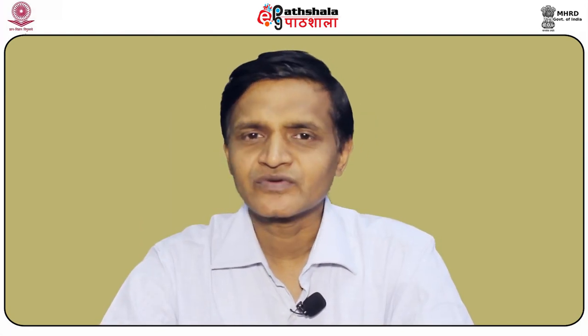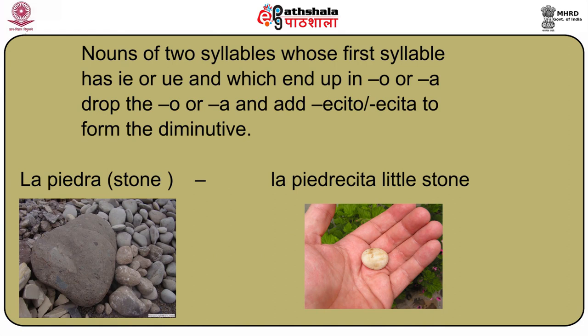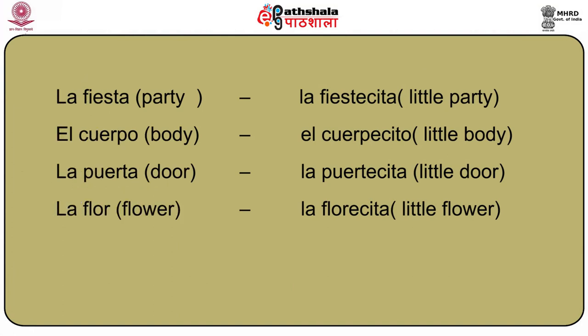Nouns of two syllables whose first syllable has -ie- or -ue- and which end in -o or -a, drop the -o or -a and add -ecito or -ecita to form the diminutive. The same is true of one-syllable nouns ending in a consonant. So: la piedra (stone) → la piedrecita (little stone); la fiesta (party) → la fiesticita (little party); el cuerpo (body) → el cuerpecito (little body); la puerta (door) → la puertecita (little door); la flor (flower) → la florecita (little flower).